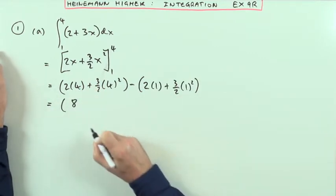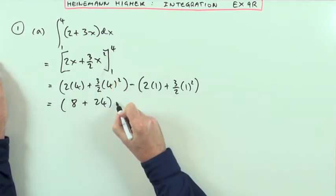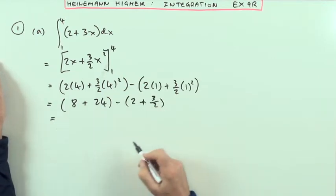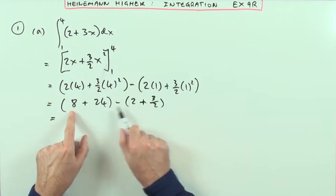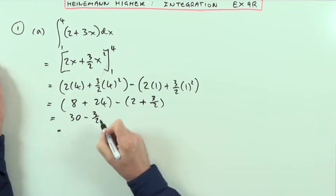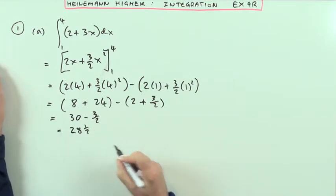So it's going to be 2 times 4, plus 3/2 times the 4 squared, that's its end value, minus its initial value, which is 2 times just 1, plus 3/2 times the 1 squared. So I've got 8, and then that's going to be 24, take away, and that's a 2, and that's a 3/2.